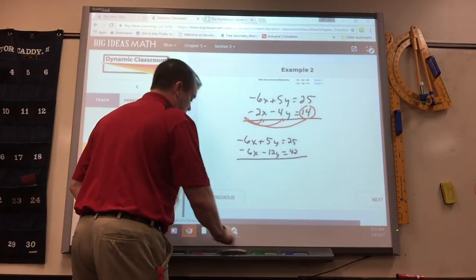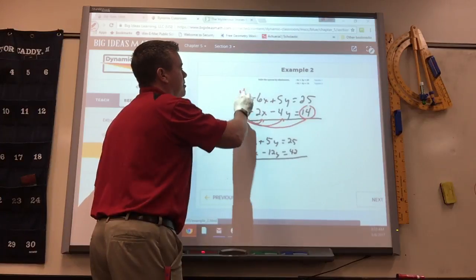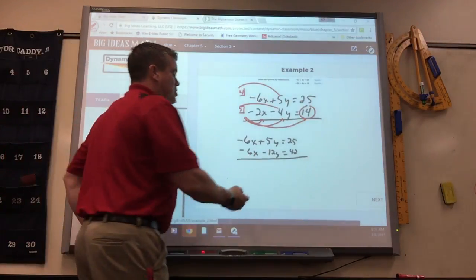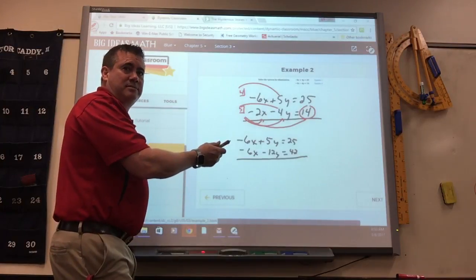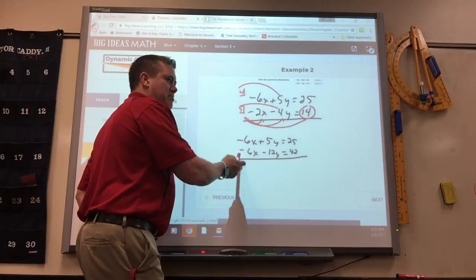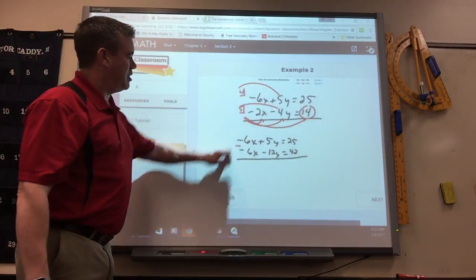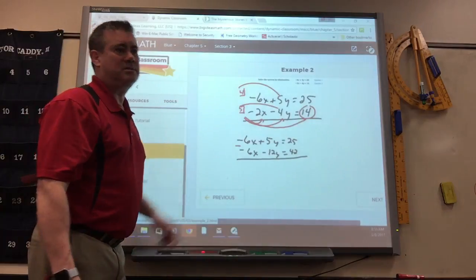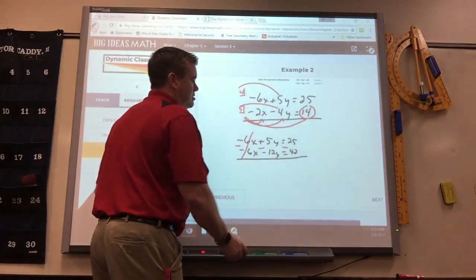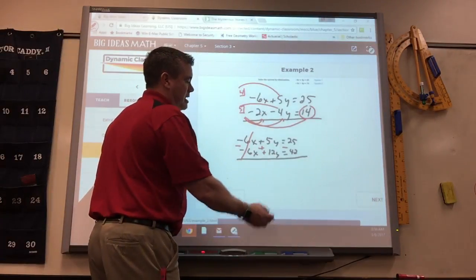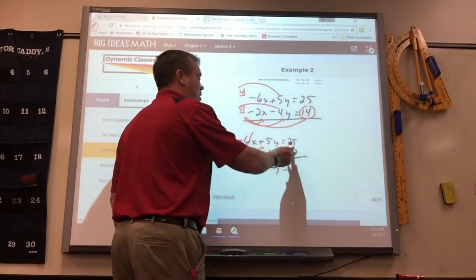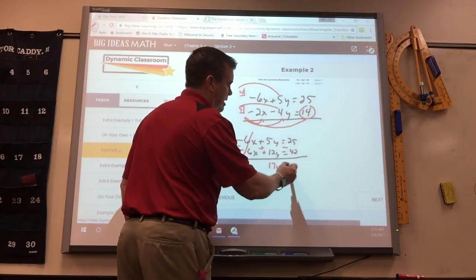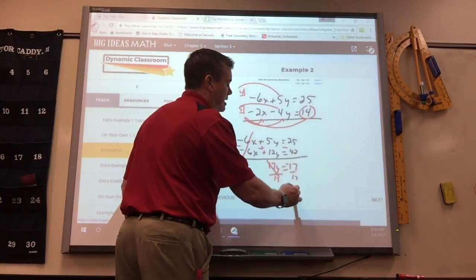Another thing I could have done, it's more work, but this would work too. I could have took this times 4 and this times 5. That would make both of these 20. So there's many different things you can do. So now I can eliminate the x's because they're the same number. You add them or subtract them? Subtract. Remember, if they're the same sign, you subtract. If you added negative 6 plus negative 6 is negative 12. That doesn't eliminate. So you got to subtract. So that's what you do to the others. 5 take away negative 12, change the signs and you get 17y. 25 take away 42 is negative 17. So you just divide by 17 and y is negative 1.